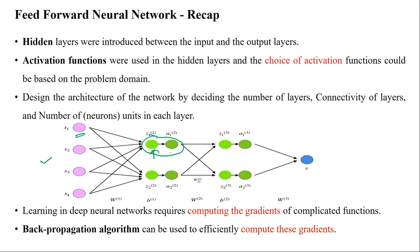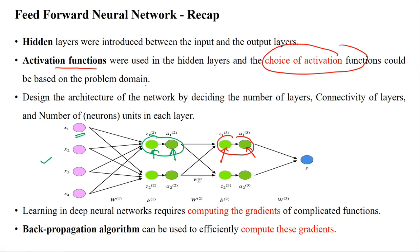Each hidden unit computes a linear sum of the given inputs, followed by an activation function. Hidden layers can be created with activation functions used in each and every hidden layer. The choice of activation functions could be based upon the problem statement — for example, binary classification or multi-class classification — so activation functions are selected based upon the given problem statement.